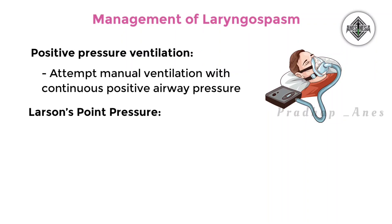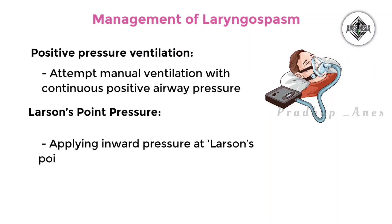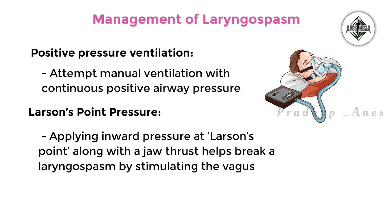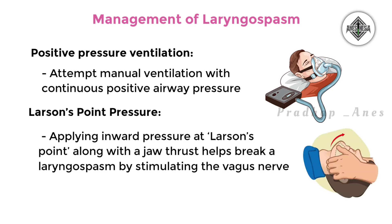Positive pressure ventilation: Attempt manual ventilation with continuous positive airway pressure (CPAP) to open the airway. Applying inward pressure at Larson's point along with a jaw thrust helps break a laryngospasm by stimulating the vagus nerve. This interruption can relax the vocal cord muscles, briefly opening the airway for improved breathing.